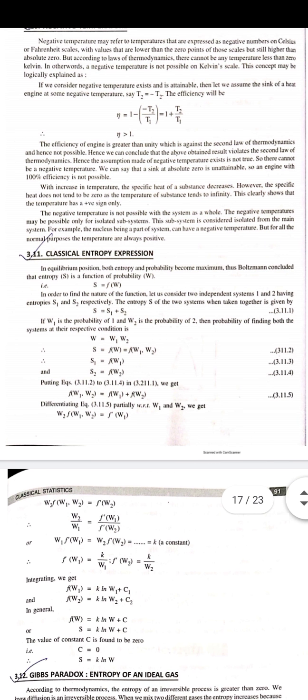Negative temperature is not possible with the system as a whole. But if you divide it into parts and make subsystems, then negative temperature may be possible for an isolated subsystem. Next, the classical entropy expression.